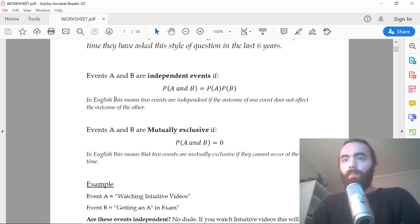So just quickly, if two events A and B are independent, this basically just means that this equation is true: P(A∩B) = P(A)P(B). In English, if two events are independent, then the outcome of one event doesn't affect the outcome of the other. And sometimes occasionally they ask you if two events are mutually exclusive, and that just simply means that these events cannot occur at the same time.